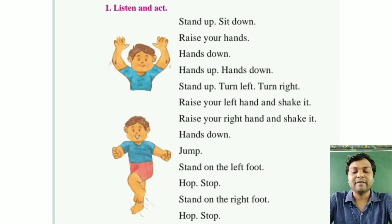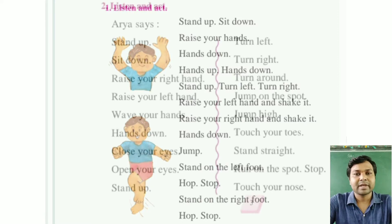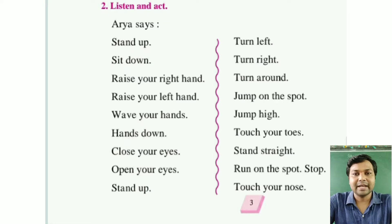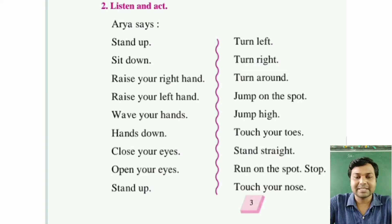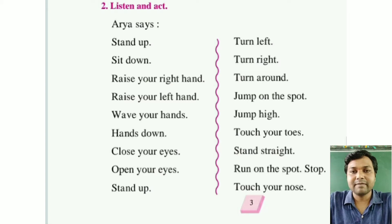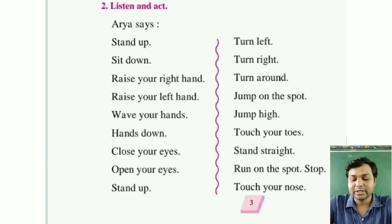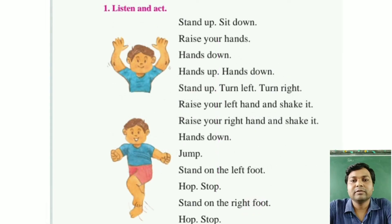Stand on the left foot, hop, stop. Stand on the right foot, hop, stop. Activity number two — listen and act. Aria says: stand up, sit down, raise your right hand, raise your left hand, raise your hand, hands down, close your eyes, open your eyes, stand up, turn left, turn right, turn around, jump on the spot, jump high, touch your toes, stand straight, run on the spot, stop, touch your nose. Done. Now we explain the lesson.